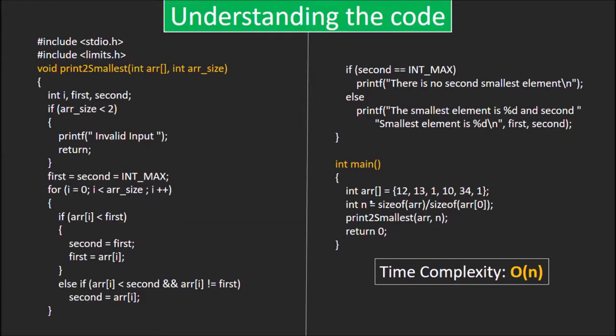Let's try to understand the code now. Starting with the main function. We call the function print2smallest and send the initial array and its size as parameters.